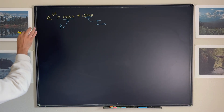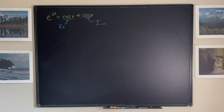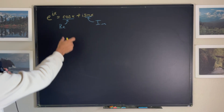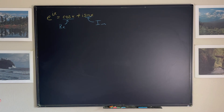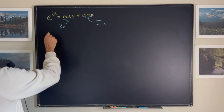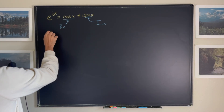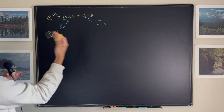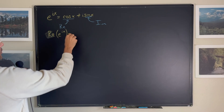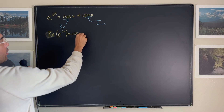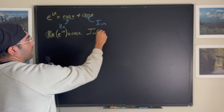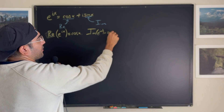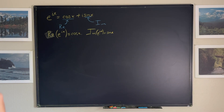This is the Euler formula: e to the ix is equal to cosine x plus i sine x. Notice that we have a real part in the cosine and an imaginary part in the sine. One of the cool things with the Euler formula is we can call for the real part — Re — of this function, and that's going to be cosine of x. And we can call for the imaginary part of e to the ix, and that's just going to be sine of x.